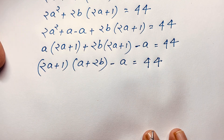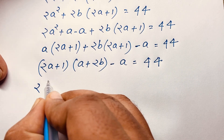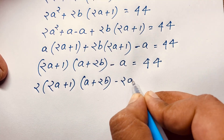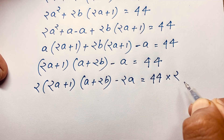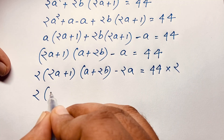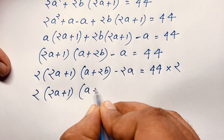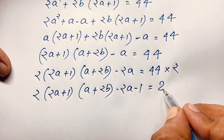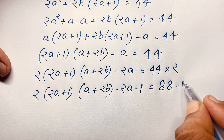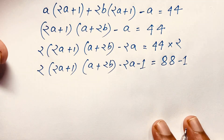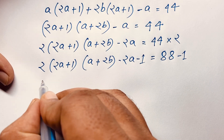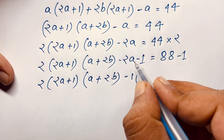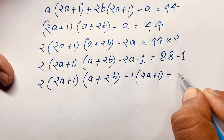Multiplying both sides by 2: 2 times (2a plus 1) times (a plus 2b) minus 2a equals 44 times 2, which is 88. I subtract negative 1 from both sides — subtracting 1 from both sides — so the expression becomes 2 times (2a plus 1) times (a plus 2b), and factoring out the minus 1 gives (2a plus 1), so it equals 87.